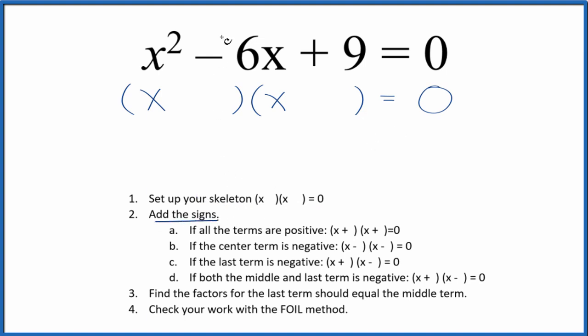Then we add the signs. So here, the middle term is negative. When the middle term is negative, we're just going to put a negative and a negative in our skeleton equation, like this.